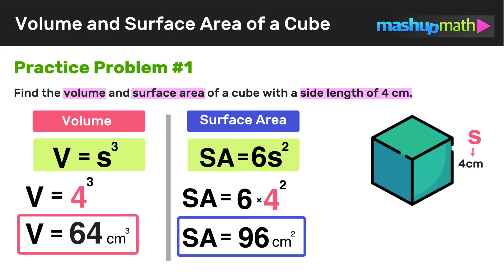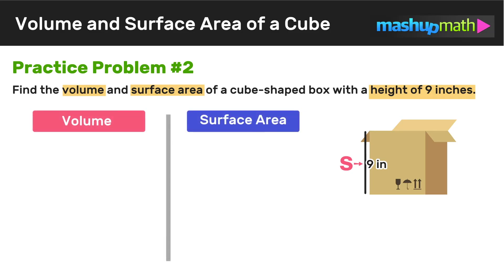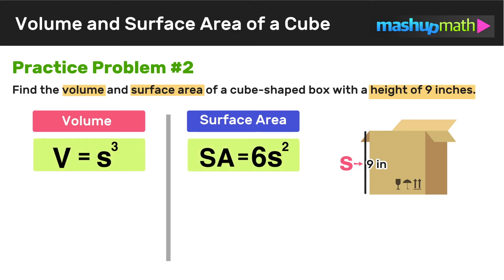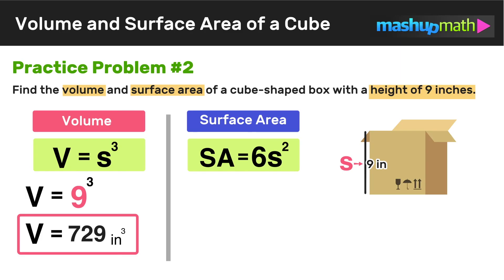In future examples, the value for s will always stay the same, so as long as you understand how to apply the formulas, you'll be able to solve these problems. In our second example, we have to find the volume and surface area of a cube-shaped box with a height of 9 inches. Since it's a cube, all side lengths equal 9, so s equals 9. For volume: v equals s to the third power, so 9 to the third power. 9 times 9 times 9 equals 729, so the volume of the box is 729 cubic inches.